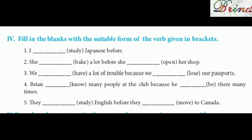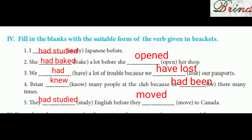Roman numeral four: fill in the blanks with the suitable form of the verb given in brackets. 'I had studied Japanese before.' 'She had baked a lot before she opened her shop.' — bracket words are 'bake' and 'open.'